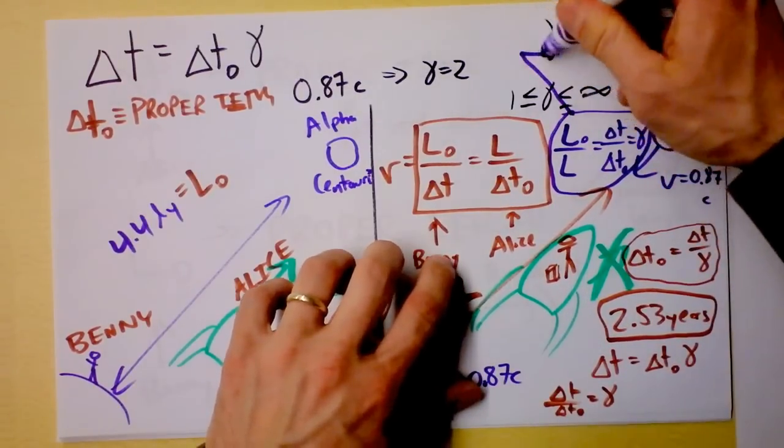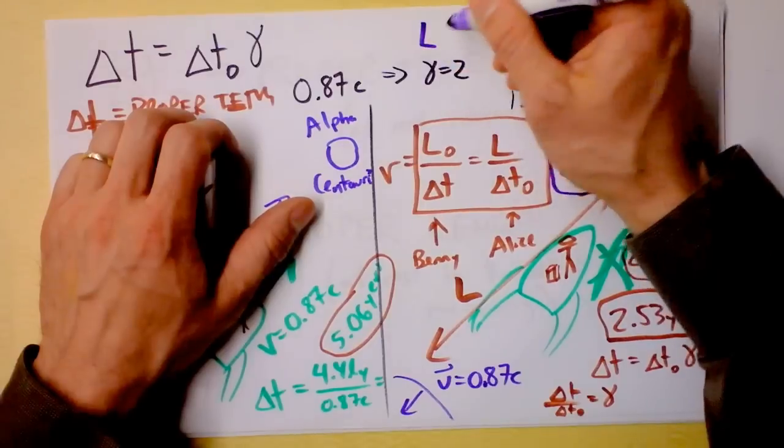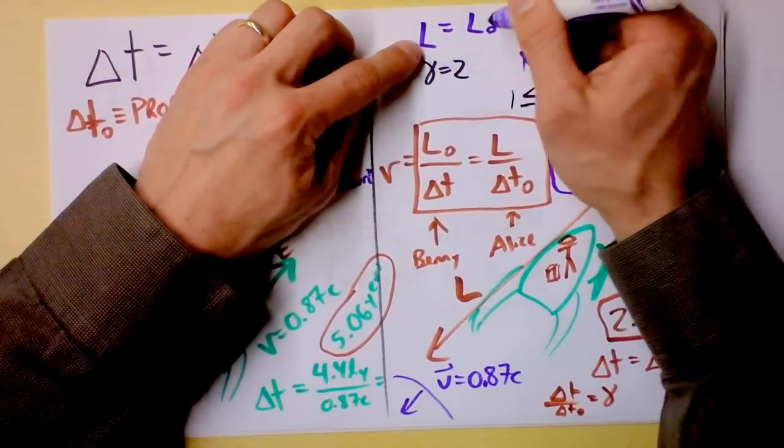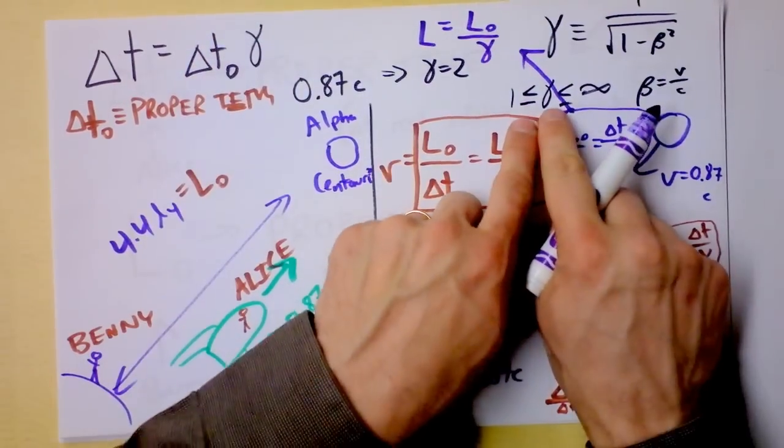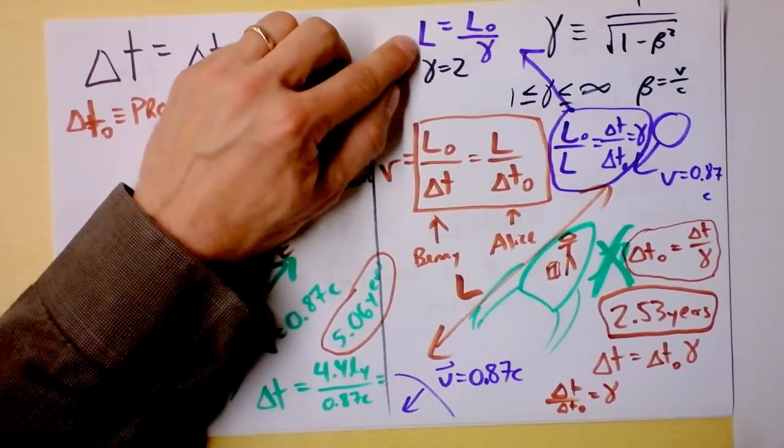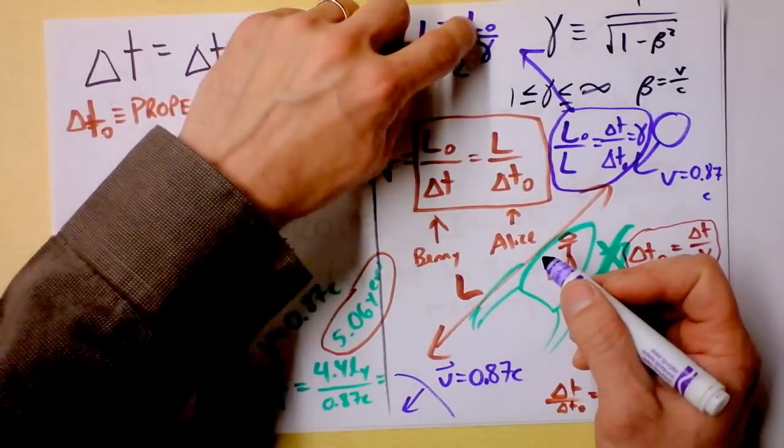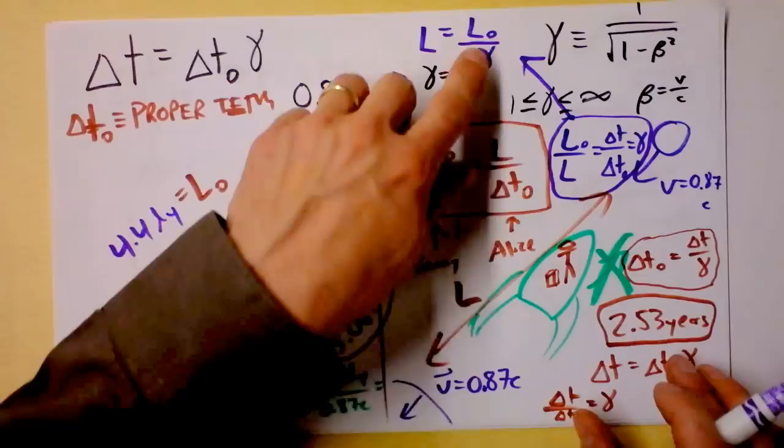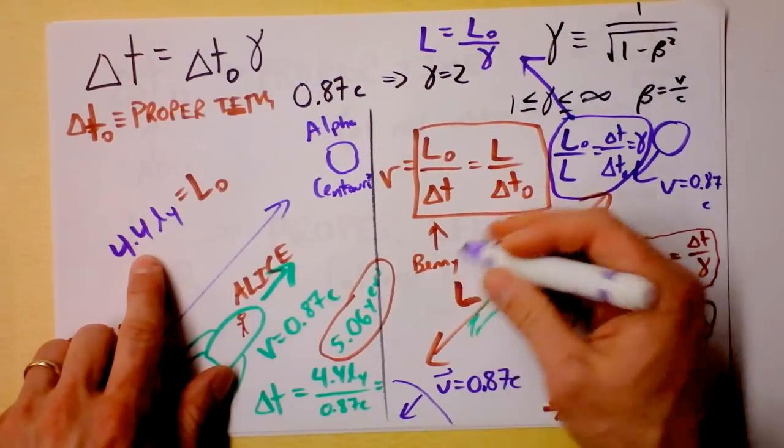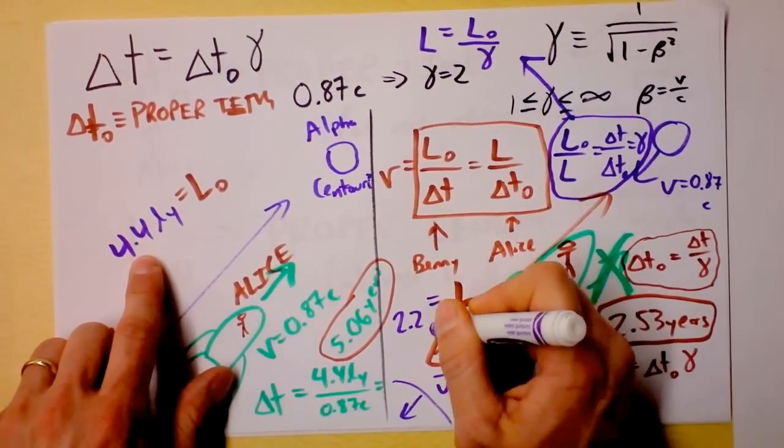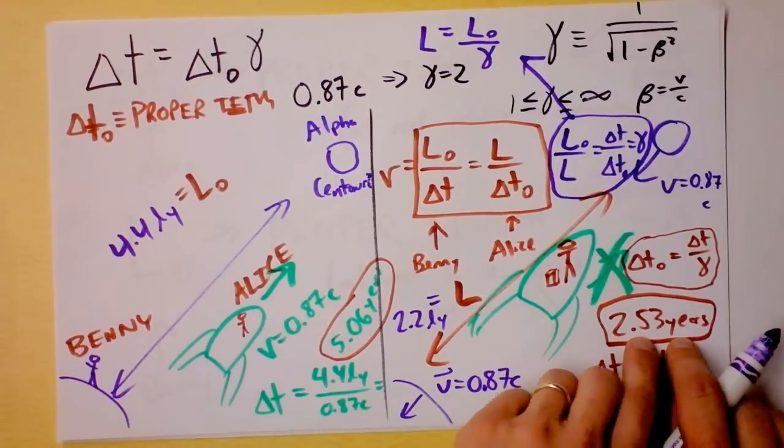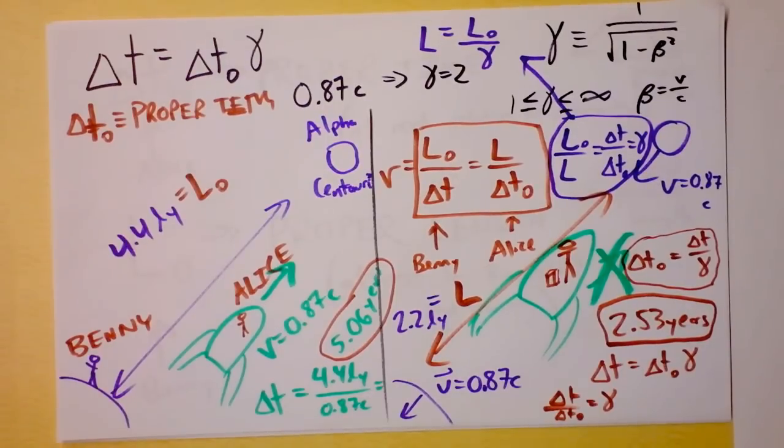So this is Benny, and he finds the speed by L0 over delta T. And this is Alice, and she finds the speed by L. She doesn't know the proper length, but she knows the proper time. And if we just rearrange this, remember we got a relationship already between delta T and delta T0, we know that that's equal to gamma. If I solve this for delta T over delta T0, that's going to be L0 over L. That's equal to gamma. So the contracted length L is equal to L0 divided by gamma. Remember, gamma is bounded between 1 and infinity, so the length that Alice observes is less than the actual length between Alpha Centauri and Earth. In fact, Alice believes that she has gone only 2.2 light years. Would it still take her 2.53 years? Yeah, it would. It is awesome and also frightening. Some results will be discussed in the next video.